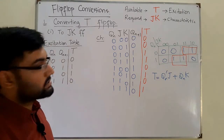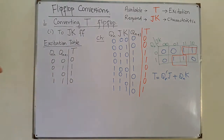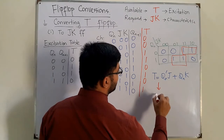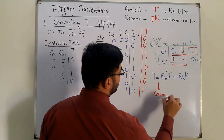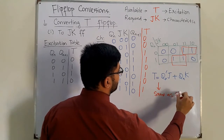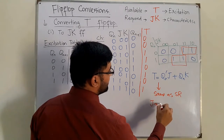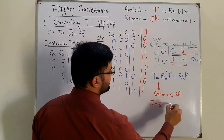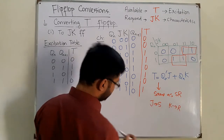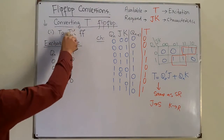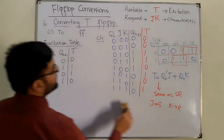This expression T = Qn'J + QnK is the same form as for the SR flip-flop conversion. The circuit diagram is identical — you simply replace S with J and R with K. That concludes the T flip-flop to JK flip-flop conversion.